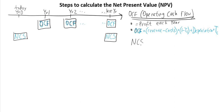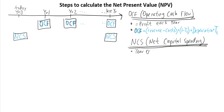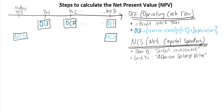Net capital spending involves two things. First, in year zero, it's what we call the initial investment — the money spent right away, probably the largest expense any project involves. Then in the last year, it's the money we get back after selling everything used, which is known as the after-tax salvage value. The formula for after-tax salvage value starts with the selling price.